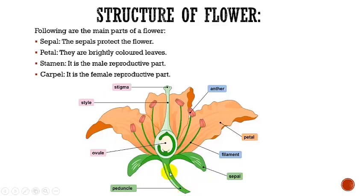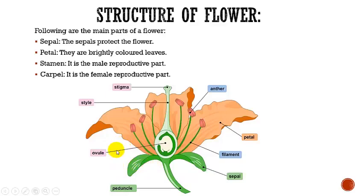A flower grows on a stem called a stalk. This stalk is also called the peduncle. All the parts of a flower are joined to the flower stalk. They are arranged on the stalk in the form of rings, and these rings are called whorls.